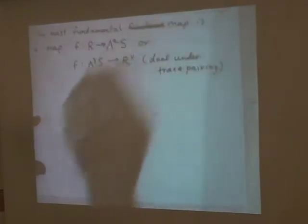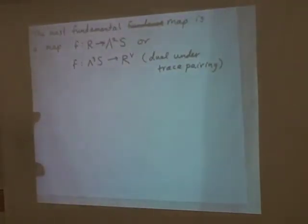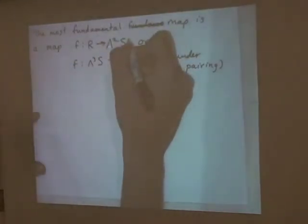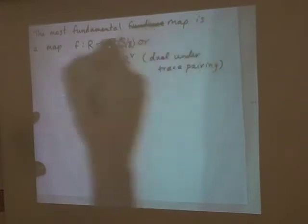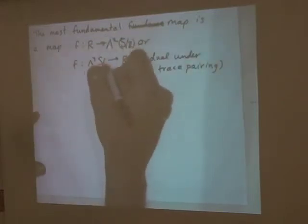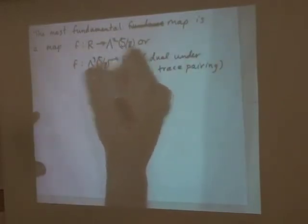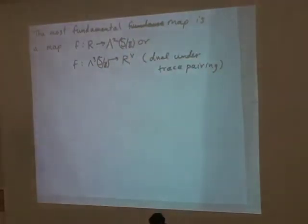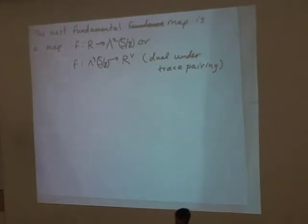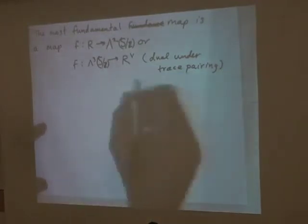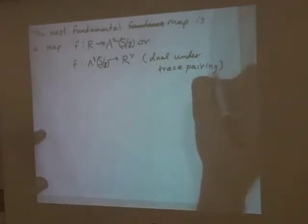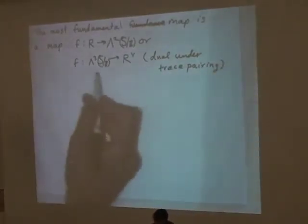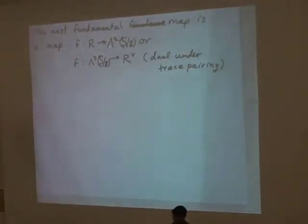What actually happens is that everything reduces mod Z. S mod Z is rank 5, so wedge 2 and wedge 3 of S are naturally dual. The most fundamental map is actually a trilinear alternating map from S mod Z to R dual.